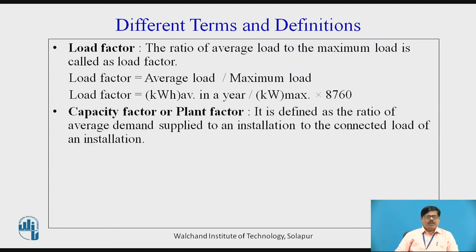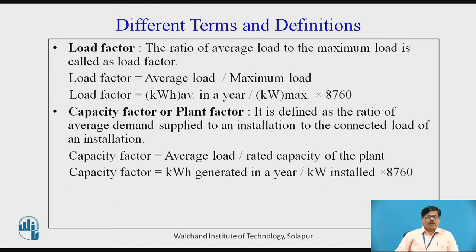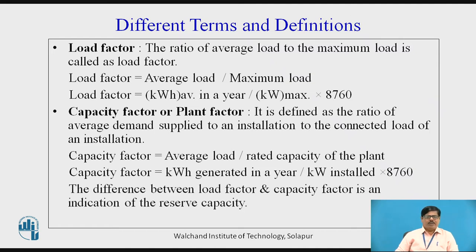Another important factor is the capacity factor, or plant factor. It is defined as the ratio of average demand supplied to an installation to the rated capacity of the plant — that is, average load divided by rated capacity. For an annual basis, the capacity factor equals the number of kilowatt-hours of electrical energy generated in a year divided by the kilowatt installed multiplied by 8760 hours. The difference between the load factor and the capacity factor is an indication of the reserve capacity.